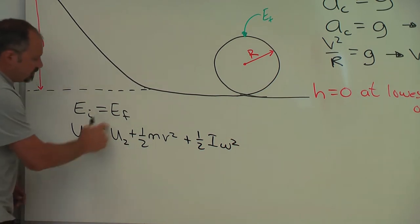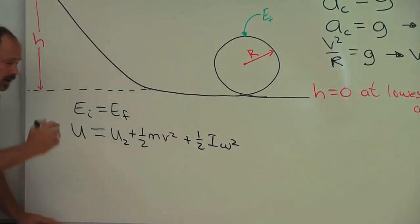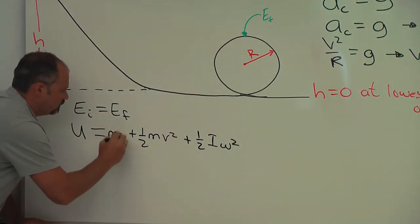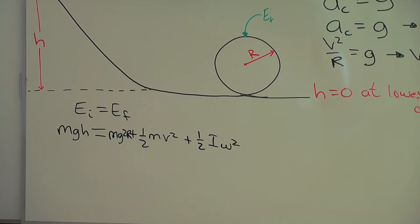Now, what is this potential energy at the top? It's a distance of 2R up, so we can put that in here, mg(2R). And then here, the initial potential energy, well that's mgh, the height that we start at.